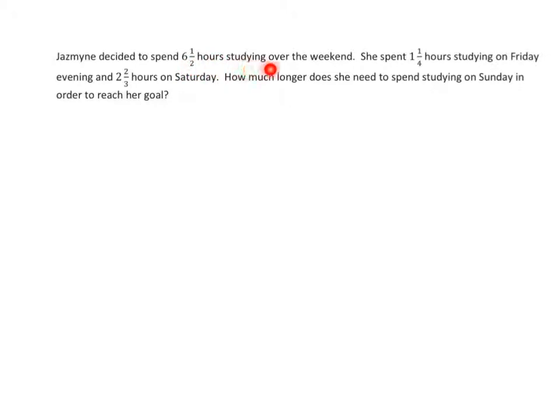Okay, Jasmine decided to spend 6 and 1 half hours studying over the weekend. Okay, that's the whole. She spent 1 and 1 fourth hours studying on Friday evening. And 2 and 2 thirds hours on Saturday. Those are two of the parts. How much longer does she need to spend studying on Sunday in order to reach her goal? Okay, the tape diagram. As I said, we know the whole. And that is 6 and 1 half. That's her goal. We know that on Friday, she studied 1 and 1 fourth hours. On Saturday, she studied 2 and 2 thirds hours. And the question is, how much time did she spend on Sunday? We don't know that.